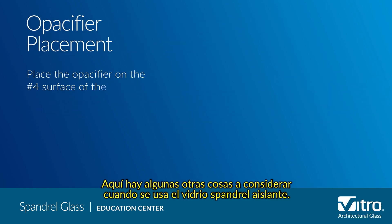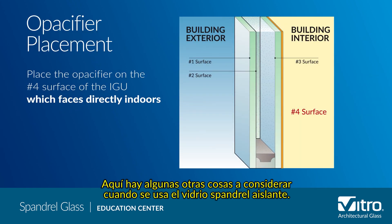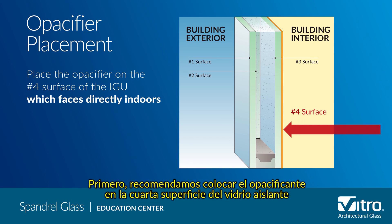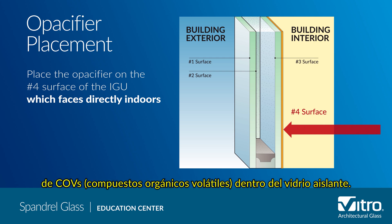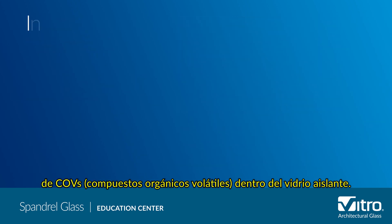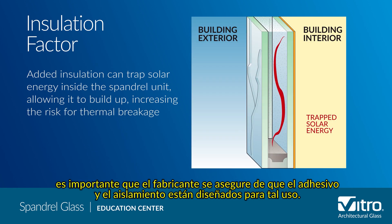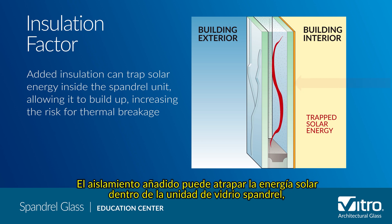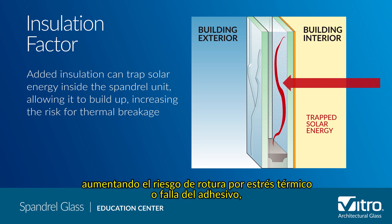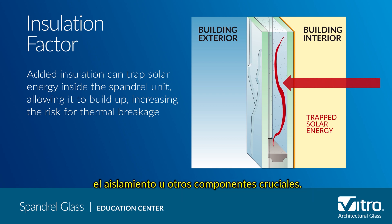Here are some other things to consider when using IG spandrel glass. First, we recommend placing the opacifier on the fourth surface of the IG to avoid potential release of VOCs inside the IG. Second, if insulation is going to be used with an IG panel, it's important for the fabricator to ensure that the adhesive and insulation are designed for such a use. Added insulation can trap solar energy inside the spandrel unit, allowing it to build up, increasing the risk for thermal breakage or failure of the adhesive, the insulation, or other critical components.